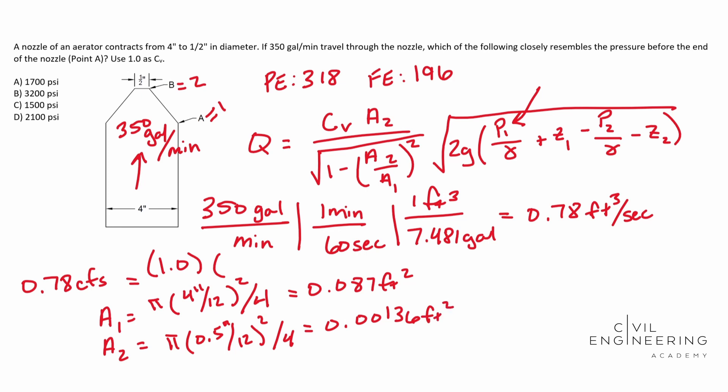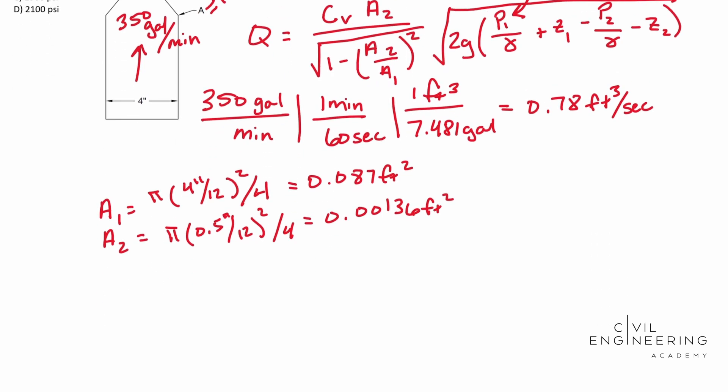So now we can plug and chug for real. So I'm going to erase my old equation here. And I'm going to rewrite, now that we have all of our unknowns, I'm going to scroll down and we're going to rewrite this guy. So rewriting 0.78 cubic feet per second is equal to our CV value. So now this one's for real. Our A2 is 0.00136. That is square feet. Write your units out because it helps you at the end.